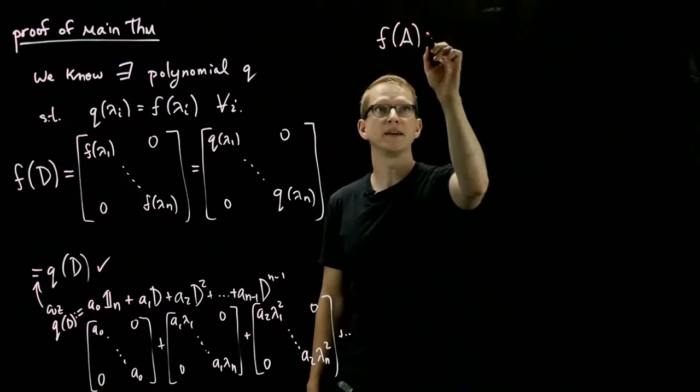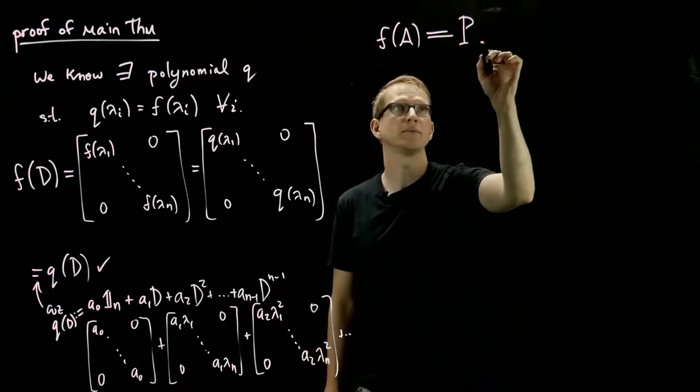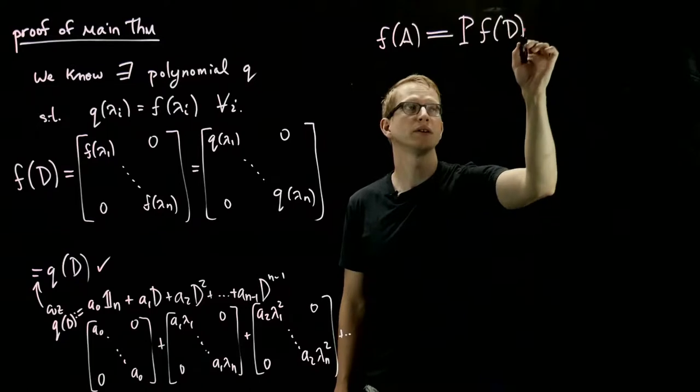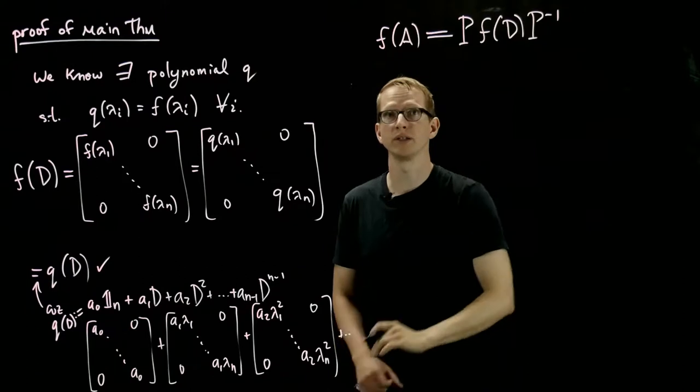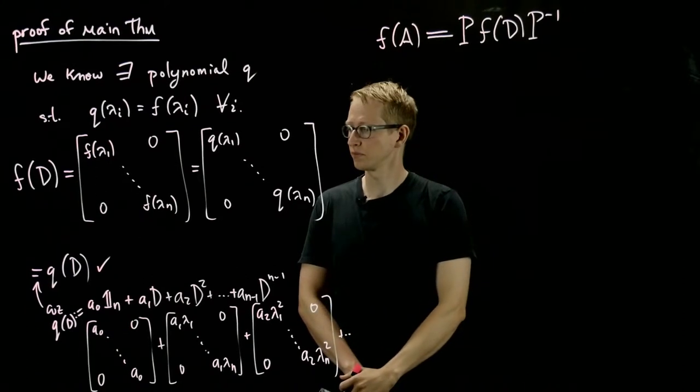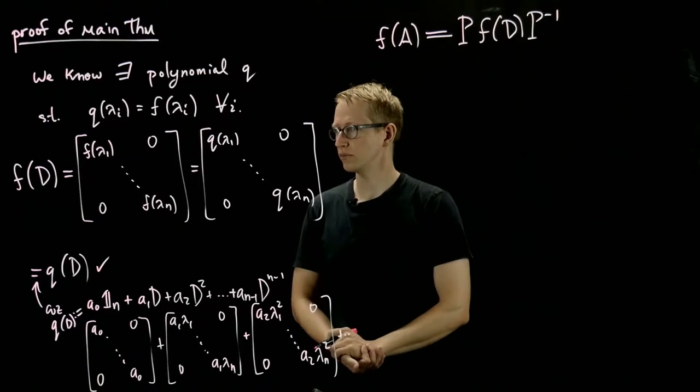Now f of A, by definition of f of A, is P times f of the diagonal matrix times P inverse, where P is the matrix of eigenvectors corresponding to those eigenvalues, is a matrix of eigenvectors.